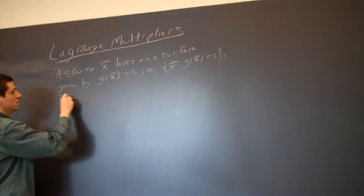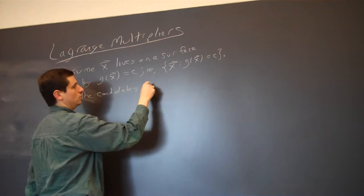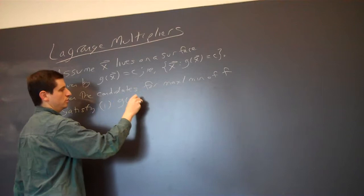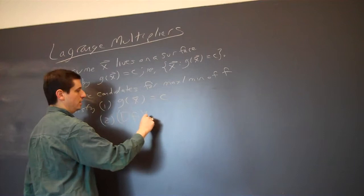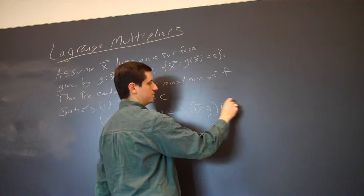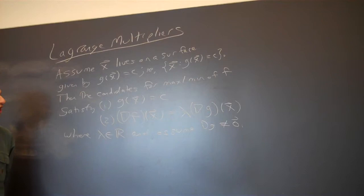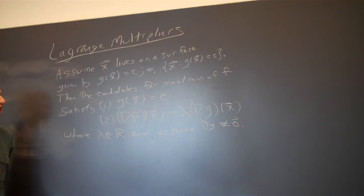Then the candidates for a max or minimum of f satisfy two conditions: one, g of x equals c; and two, the gradient of f at x equals lambda times the gradient of g at x, where lambda is a real number and we assume the gradient of g is never the zero vector. And so this is the statement of Lagrange multipliers.